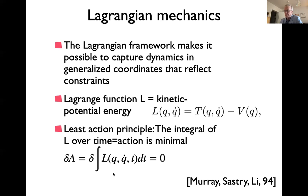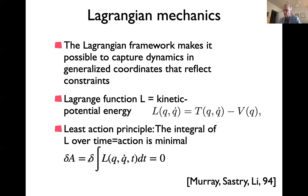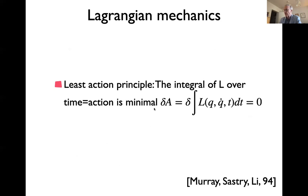Minimizing the action means that if you vary the trajectory — delta q is the idea of varying the entire time course q(t) — the true trajectories will be the ones where this integral is minimal, so the variation is zero at the minimum. This is the generalization of a derivative to function space, called a variation. We can go through a computation to derive the Lagrange equation from this, which helps clarify the functional form, and then illustrate that it gives equations of motion that make sense.